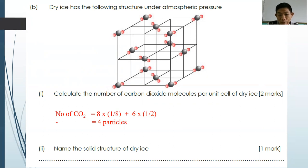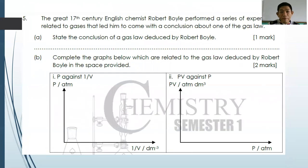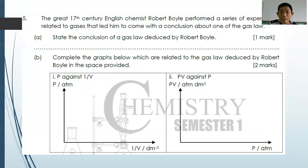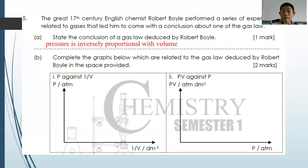Name the solid structure of dry ice — it is face-centered cubic. Moving to question number five: the 17th century English chemist Robert Boyle performed a series of experiments to study gases and arrived at a conclusion about one gas law. State the conclusion: the volume of the gas is inversely proportional to the pressure, or equivalently, pressure is inversely proportional to volume.